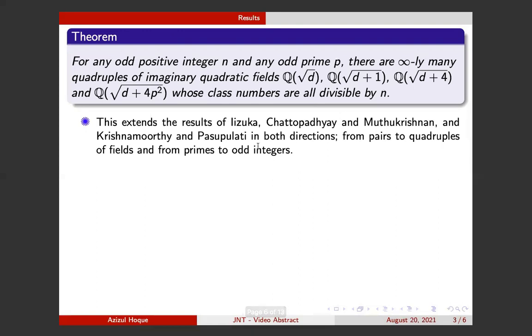This theorem extends the result of Iizuka, Chattopadhyay and Mukhopadhyay, as well as Krishnamurthy and Pashupati in two directions: from pairs to quadruples of imaginary quadratic fields, and from primes to odd integers.